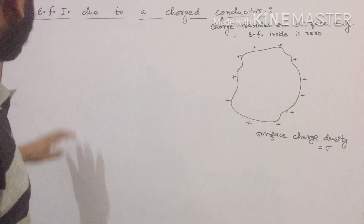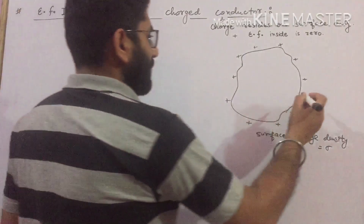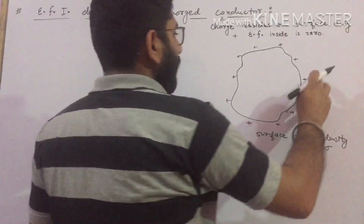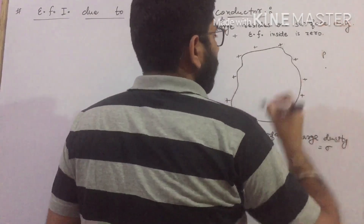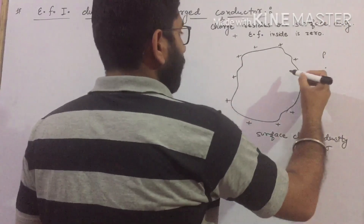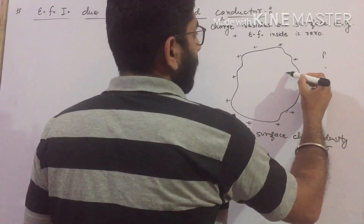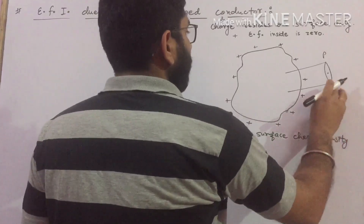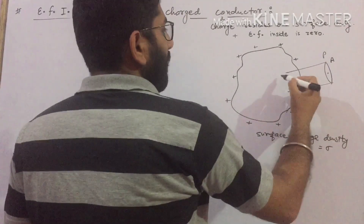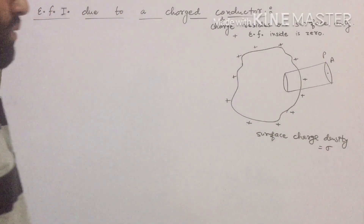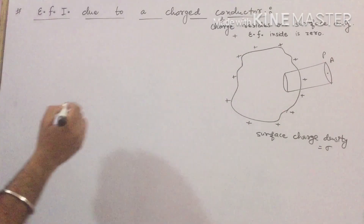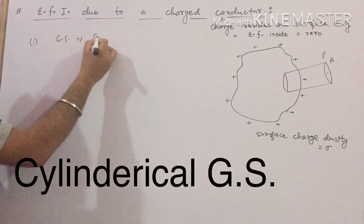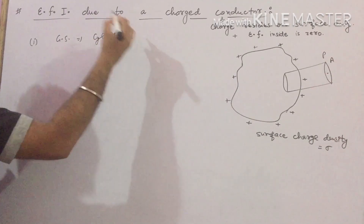Our target is to find the electric field intensity. Let us suppose there is a point P very near to the surface, and we have to find the electric field intensity at point P. To do this, we consider a cylindrical Gaussian surface with area A.